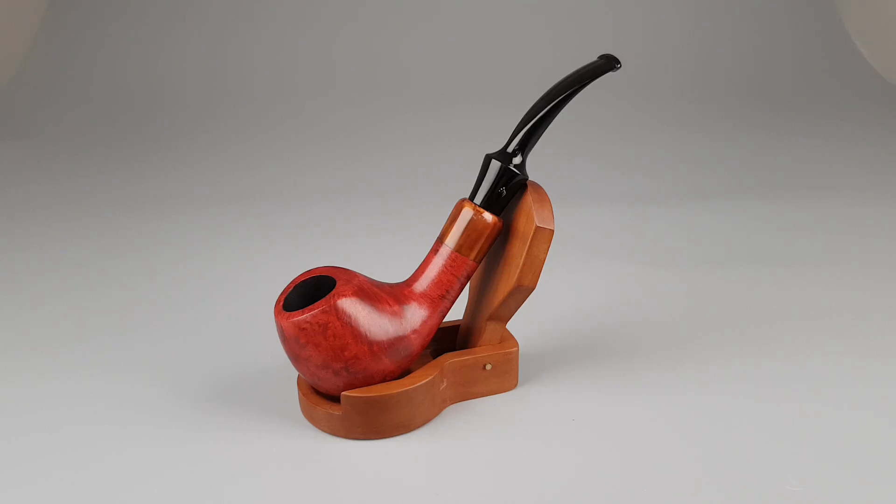Hello and welcome to another pipe presentation video. Let's have a closer look at a German Estate Oldencoat Royal series. Smooth finish, half-bent apple shape with acrylic insert and shank.